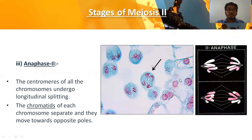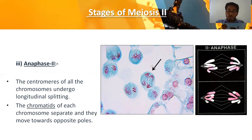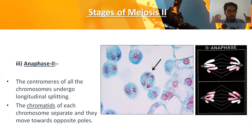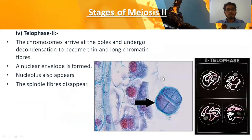Anaphase two is similar to mitosis: there is longitudinal splitting of chromosomes. The centromeres of all chromosomes undergo longitudinal splitting — unlike anaphase one, where entire chromosomes were shifted to opposite poles. Here, the chromatid arms undergo longitudinal splitting and each chromatid separates towards opposite poles. This is the microscopic view of anaphase two.